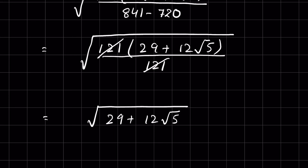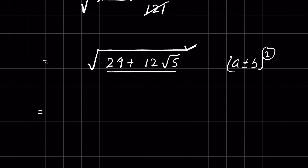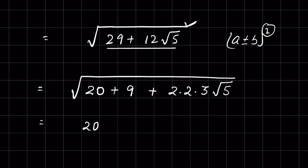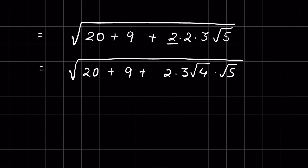To simplify √(29 + 12√5), we need to remove the square root. If we can write the expression inside as (a ± b)², the square cancels the square root. We write 29 as 20 + 9 and 12 as 2 × 2 × 3. So we have 20 + 9 + 2 × 3 × √4 × √5, and since √a × √b = √(ab).